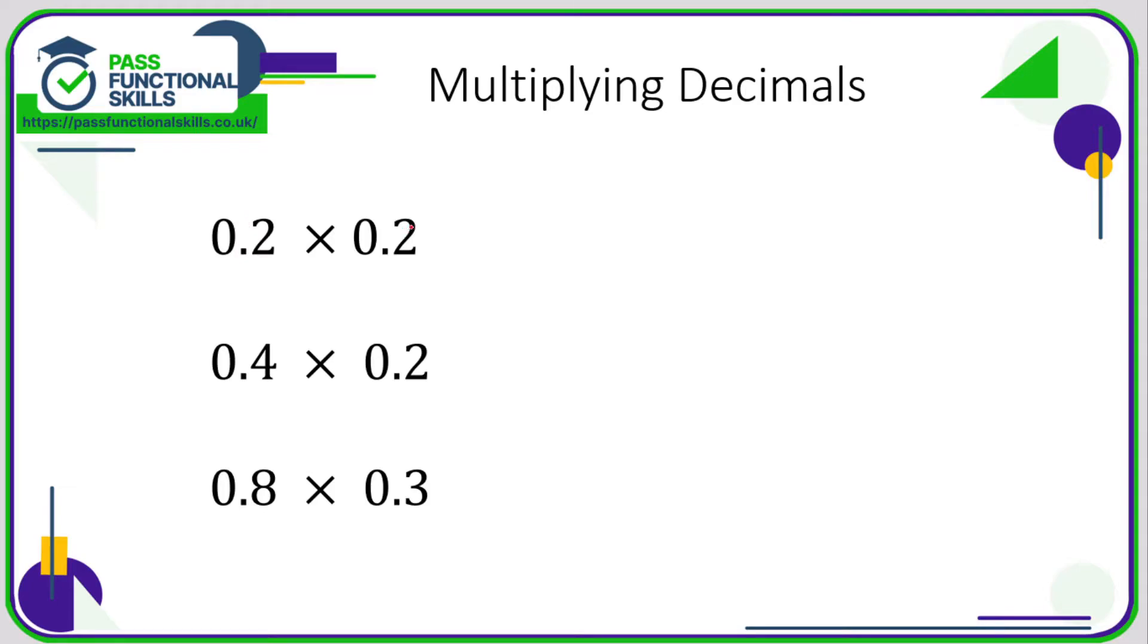0.2 times 0.2. Well, we know that 2 times 2 is 4, but we need two decimal places. So with the number 4, I'm going to put some zeros to the left of it. And now if I put the decimal point here, I've got two decimal places. So the answer is 0.04.